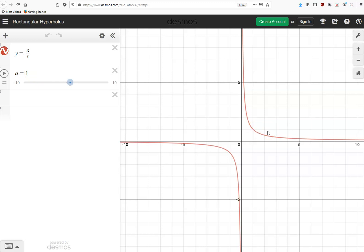Now, before I move that slider to 2, I'd like you to have a think about, pause the video and think what's going to happen to the graph when I make a equal to 2 or 5. So let's see what does happen.